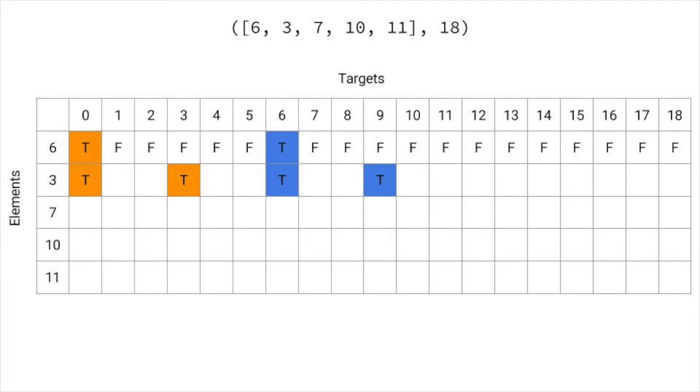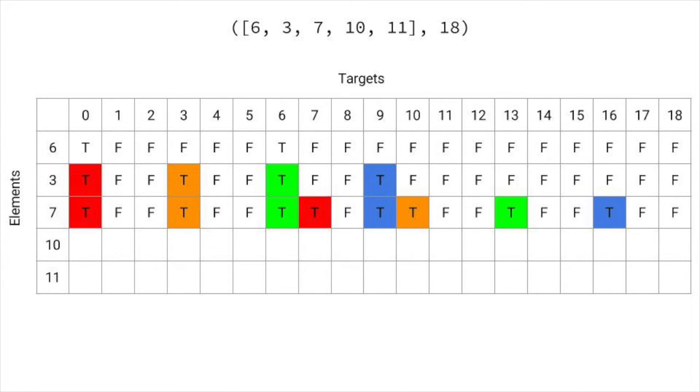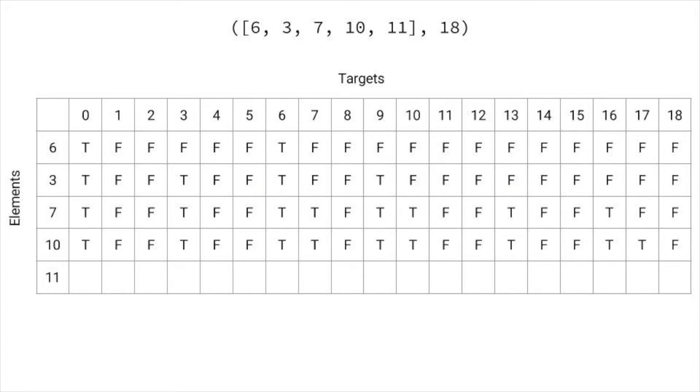To fill in the third row, we do the same thing with every true in the second row combined with the third element, and so on. We do this until we fill every row. At the end, if the target we want is true, the one in the bottom right representing the target we want with all the items, then we return true. Of course, we could shortcut this at any time if we see a true in the last column since we could just not use any of the remaining items.